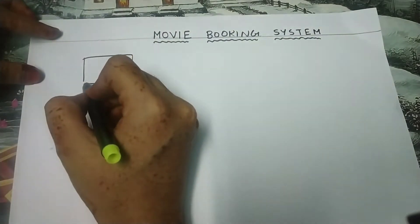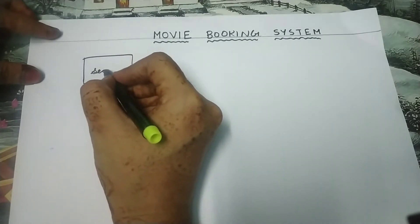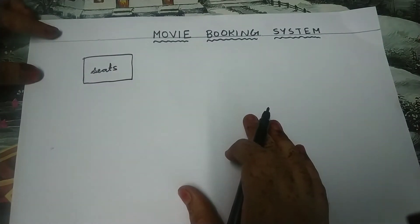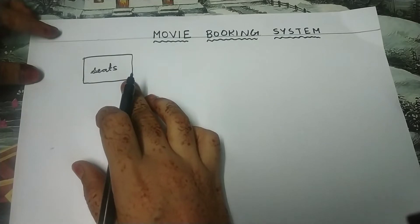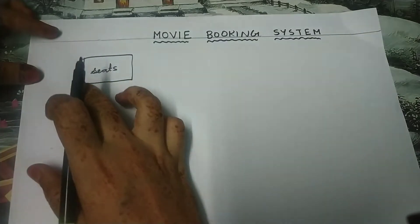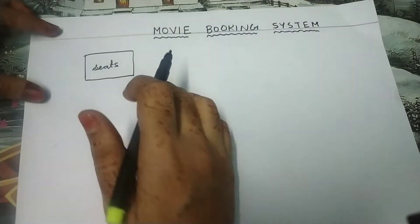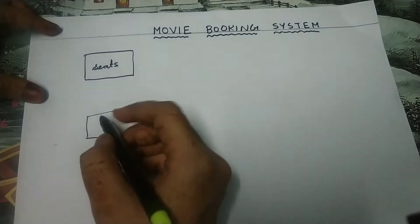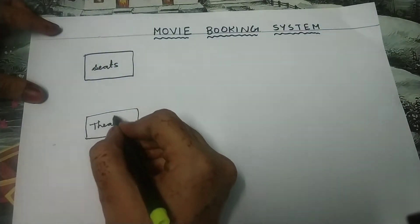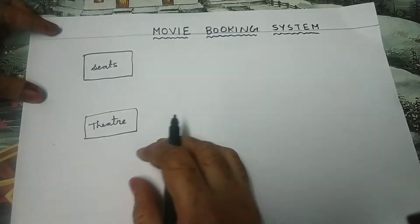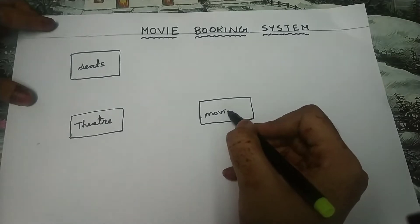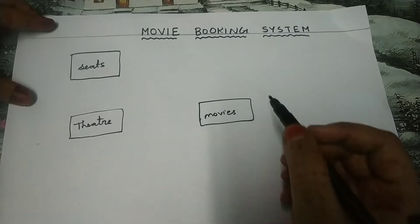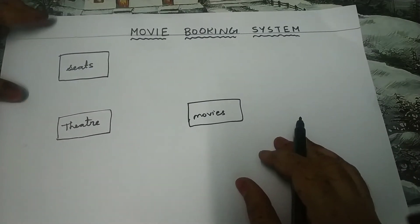The first entity is seat. An entity is nothing but an object with physical or conceptual existence. Seat is physically existing, therefore it is an entity, and it must be written inside a rectangular box. The next entity is theatre — theatre is physically existing. Next entity is movies — movies is not physically existing but it is conceptually existing, therefore it is an entity.